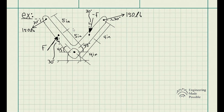For this example, there's a lot of information. We have a hinge that could rotate about this point, and we have a couple of moments applied. We have 150 pounds, and each one is equal and opposite. Then we have another couple moment, which is the force F — one is negative because it's the opposite direction of the other. The problem statement is to determine the magnitude of the couple force F.